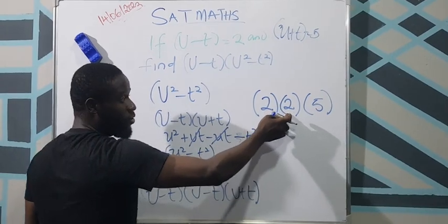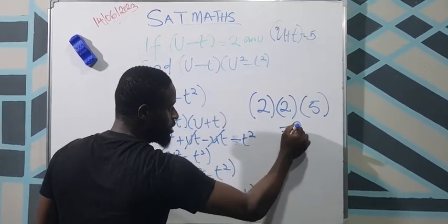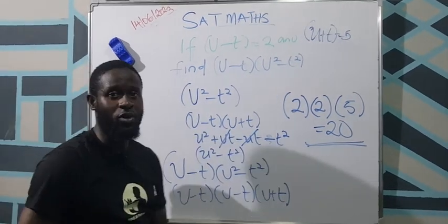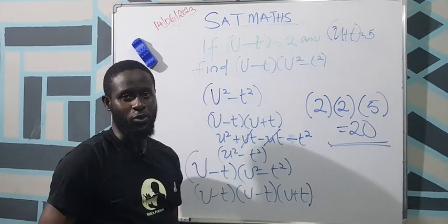So when we multiply it through, we have 2 times 2, which is 4, times 5, which is 20. This is our final answer. Thank you and continue to support us on our channel.